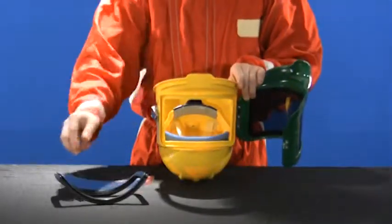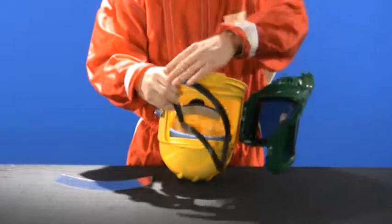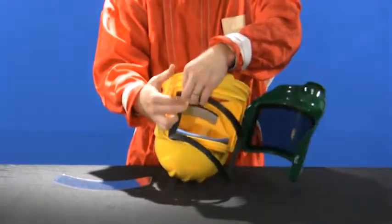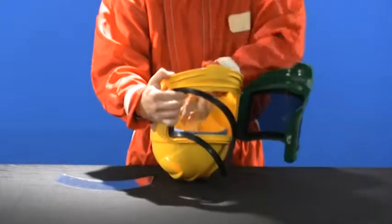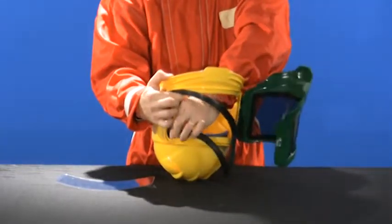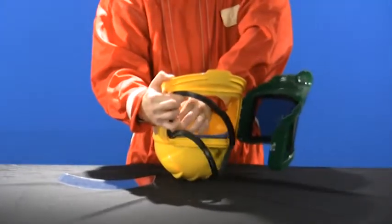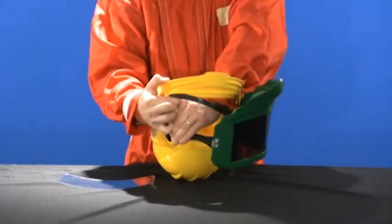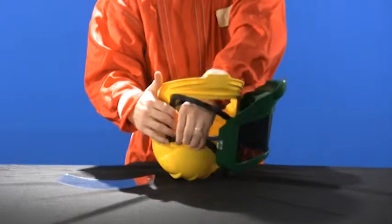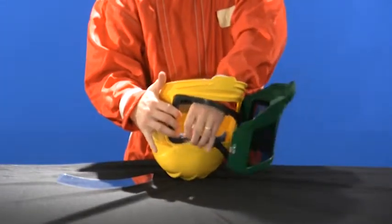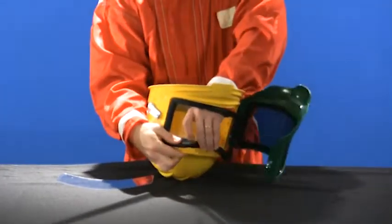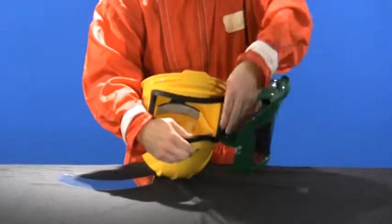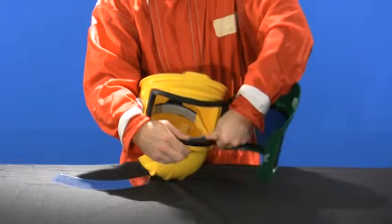Now, take your new gasket and start on one side of the helmet, securing both corners. Then inch your way to the opposite side, ensuring the gasket fits firmly around the edge of the viewing area.